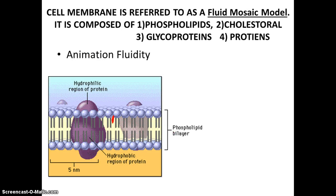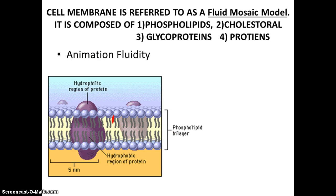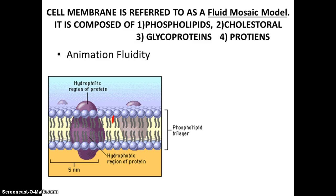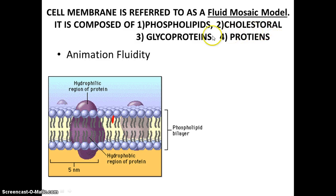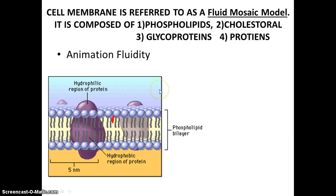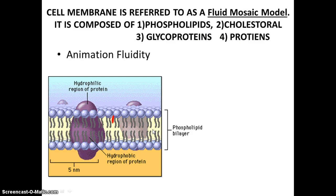Now if you look at the structure of the cell membrane, we describe it as a fluid mosaic model. What does that mean? It means that it's composed of several macromolecules — composed of phospholipids, cholesterol, glycoproteins, and proteins. And it's called fluid because it has an almost liquid-like quality.